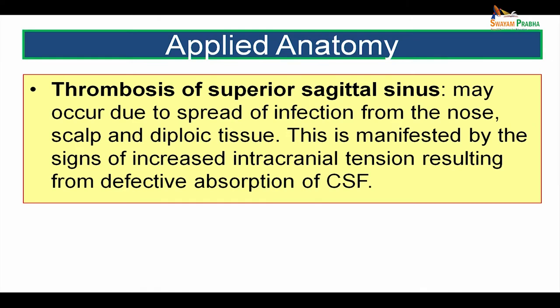Thrombosis of the superior sagittal sinus may occur due to spread of infection from the nose, scalp, or diploic tissue. It is manifested by signs of increased intracranial tension resulting from defective absorption of cerebrospinal fluid, since the superior sagittal sinus normally receives CSF through the arachnoid villi or arachnoid granulations. If thrombosed, it is unable to receive CSF, giving rise to increased intracranial tension.